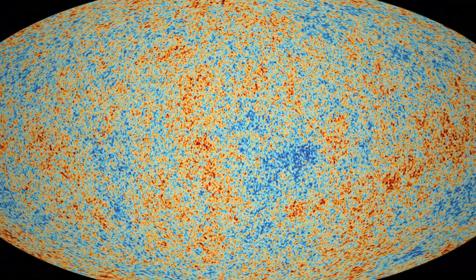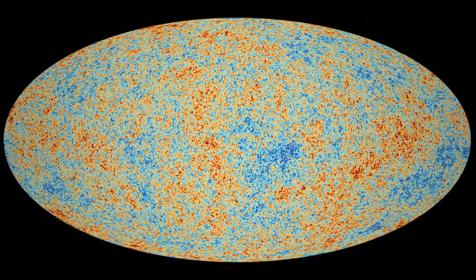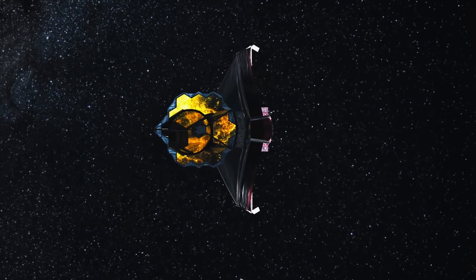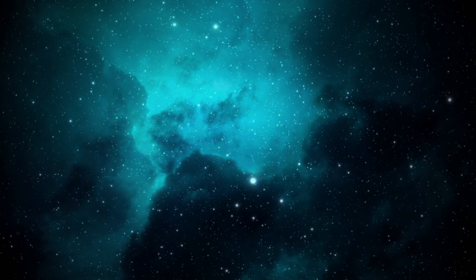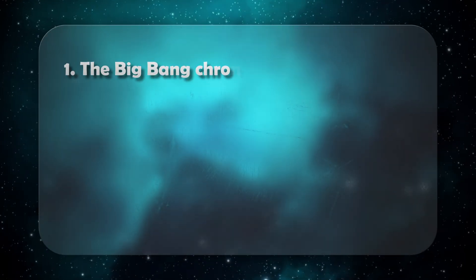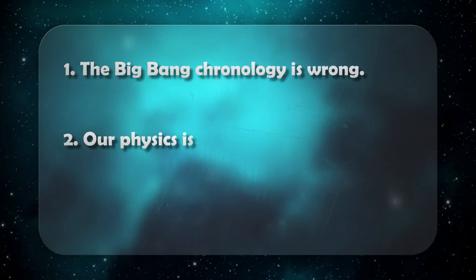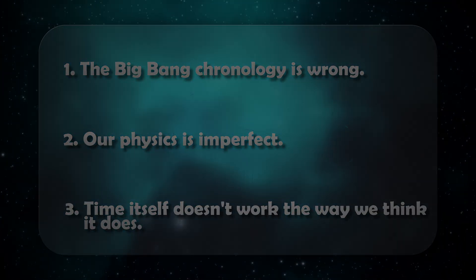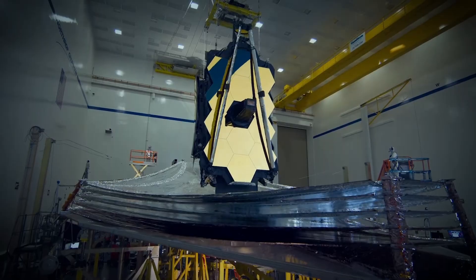The age of the universe is estimated at 13.8 billion years. But what Webb saw might challenge the foundation of that number. And if it's true, there are only three possible explanations. The Big Bang timeline is wrong. Our physics is incomplete. Or time itself doesn't work the way we think.